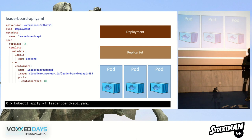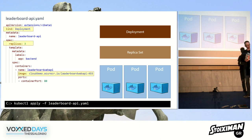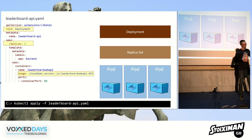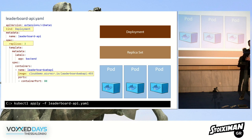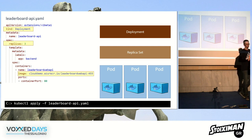To deploy to Kubernetes you use declarative files. Here's the smallest deployment file I could make — I'm deploying the leaderboard web API image with tag 455. This resource type is called a 'deployment,' and I want to run three containers so that if one crashes the application stays up. In Kubernetes these are called replicas.